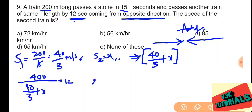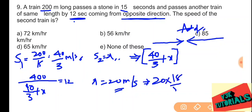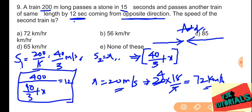After calculation, we get x equals 20 meters per second — the speed of the second train. Converting to kilometers per hour: 20 multiplied by 18 by 5 gives 72 kilometers per hour. So option A, 72 kilometers per hour, is the correct answer.